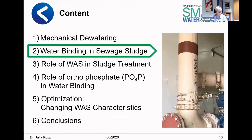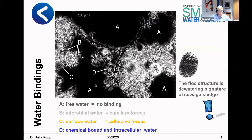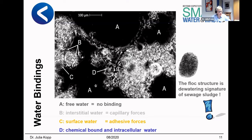If you talk about sludge dewatering, you have to talk about the water binding. Even after dewatering, if you have 25% dried solid in your sludge cake, you still have 75% water. Here you see a microscopic picture of sewage sludge showing different parts of water in relation to physical bonding. The water with no relation to sludge particles can be separated by mechanical forces. The most interesting part is the interstitial water, captured inside the sludge particles. Surface water is bound by adhesive forces, and there is chemically bound intracellular water — the binding is so strict you are not able to release it by mechanical forces.